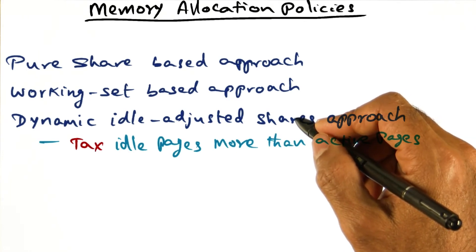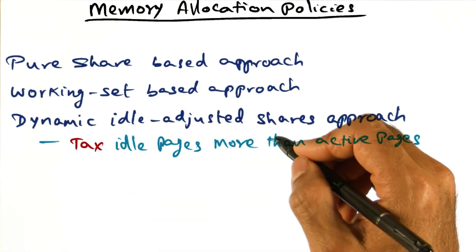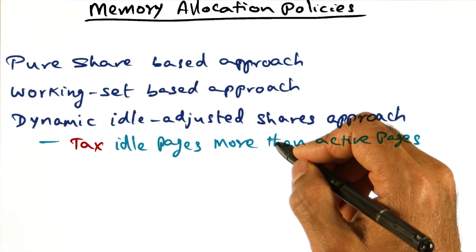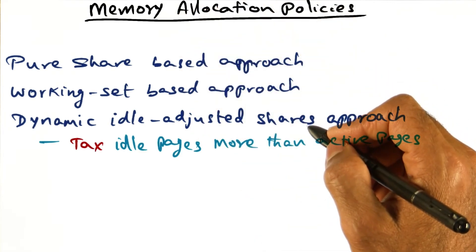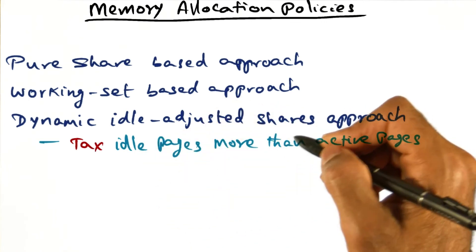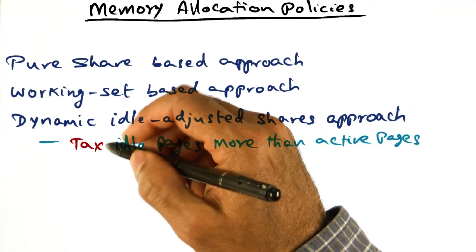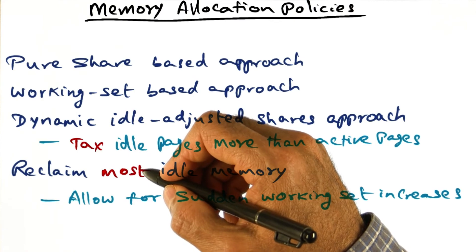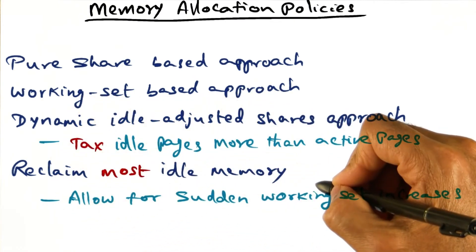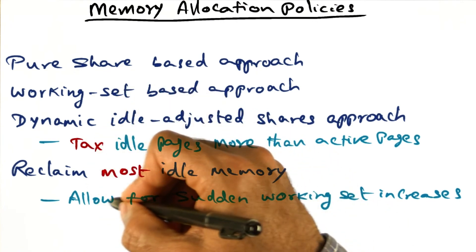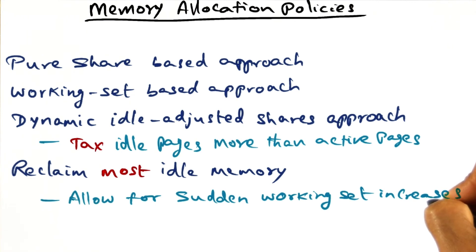Something in between is probably the best way to do it. For instance, if you use a tax rate of 50% or 75% — saying if you have idle pages, there's a 50% chance I'd take them away. That's what is being done in the VMware ESX server today in terms of how to allocate memory to the domains that need it. You use a share-based approach, but if you're not actively using the memory, we're going to take it away — and of course give it back if you start using it.